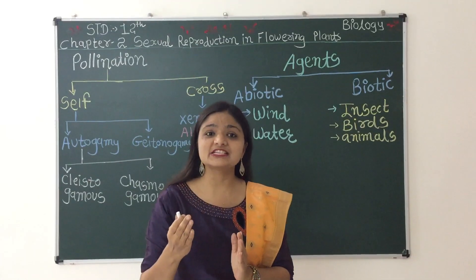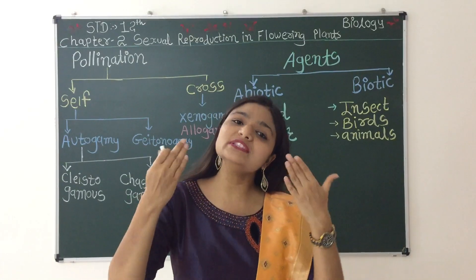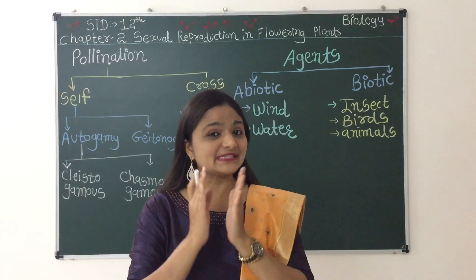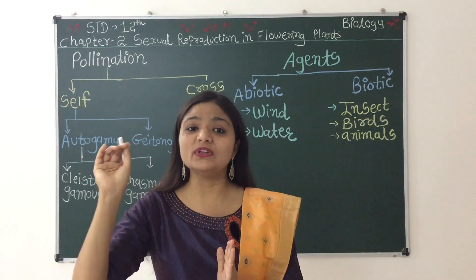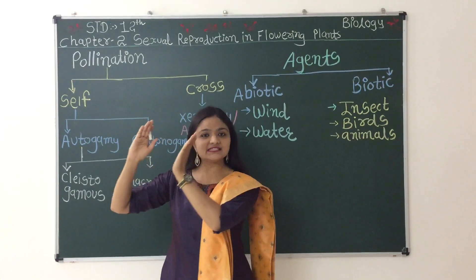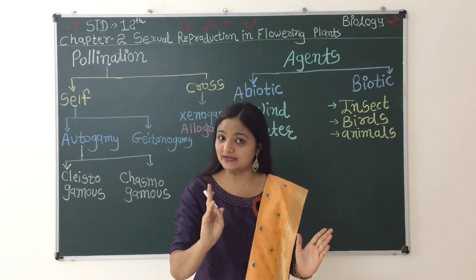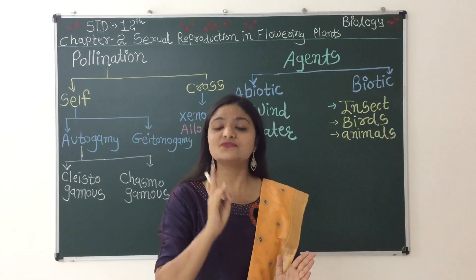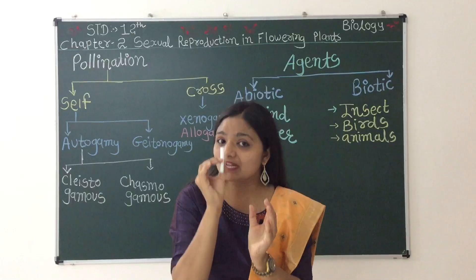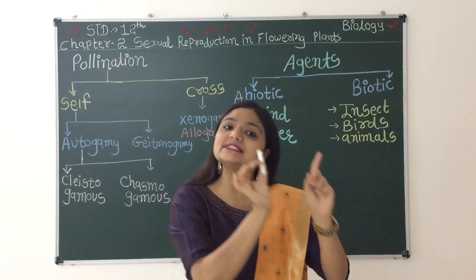What do you mean by pollination? What is its definition? The process of transfer of pollen grains — pollen grains whose structure we studied last time — from the anther to the stigma. Pollen grains transfer from anther to the stigma. This process is known as pollination.